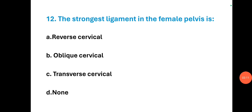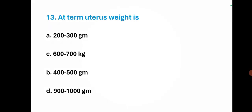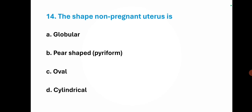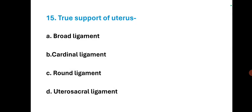The strongest ligament in the female pelvis is the transverse cervical ligament. At term, uterus weight — the right option is D — 900 to 1000 grams. The non-pregnant uterus shape — the right option is B — pear-shaped. True support of uterus — the right option is B — cardinal ligament.